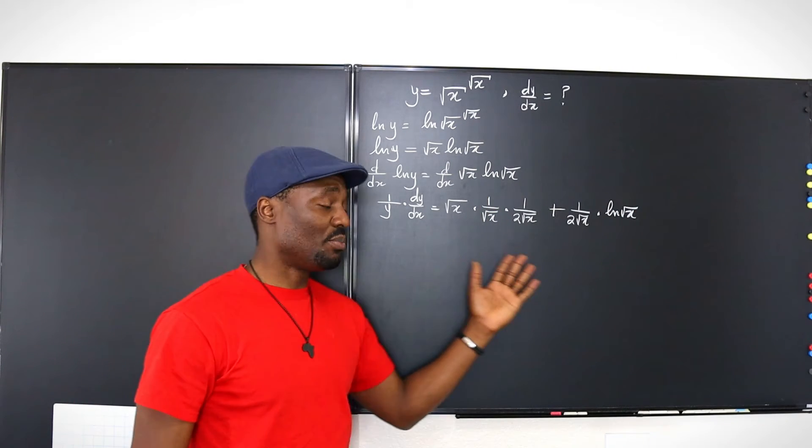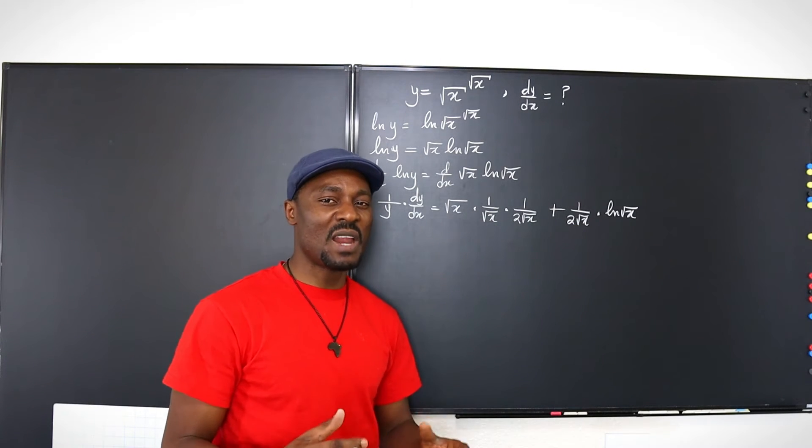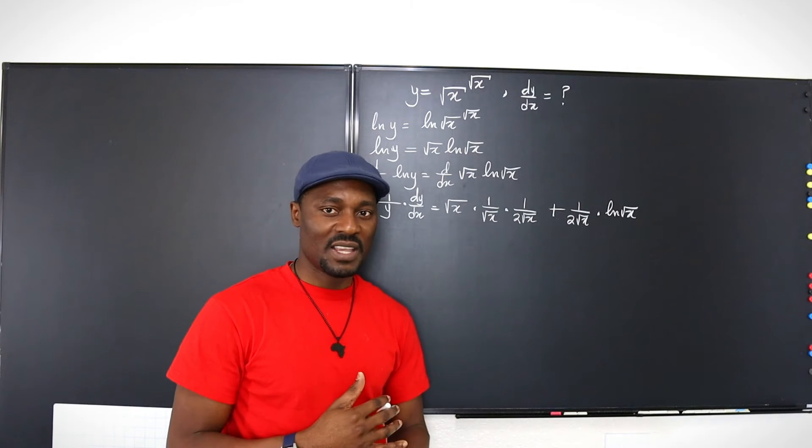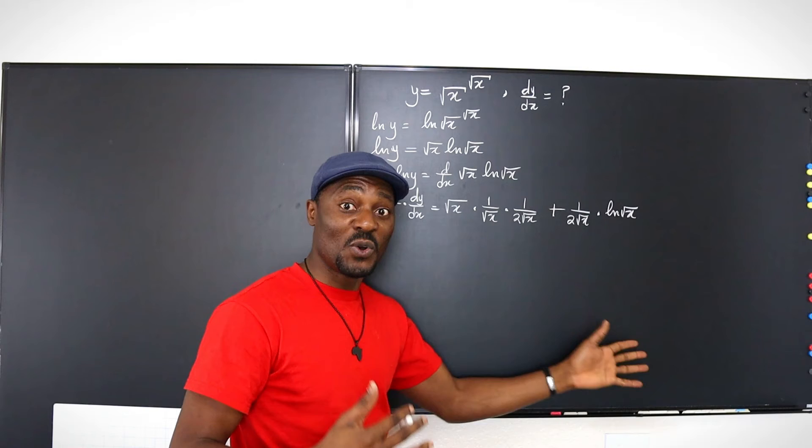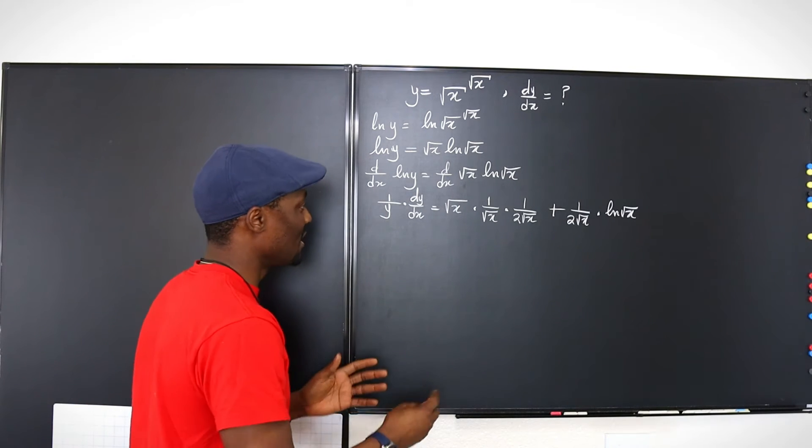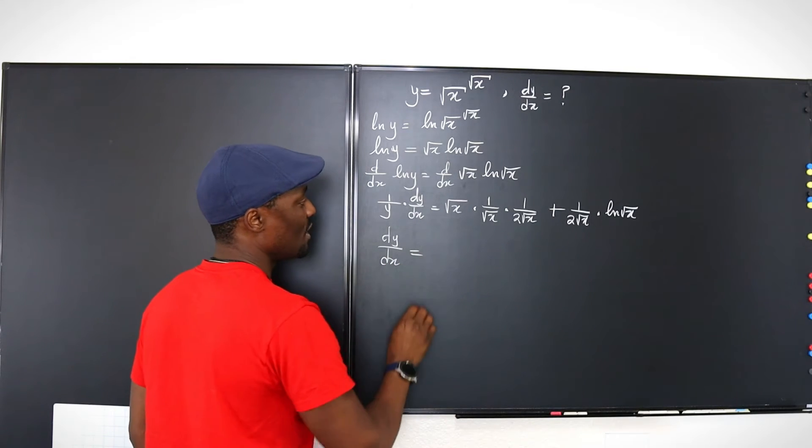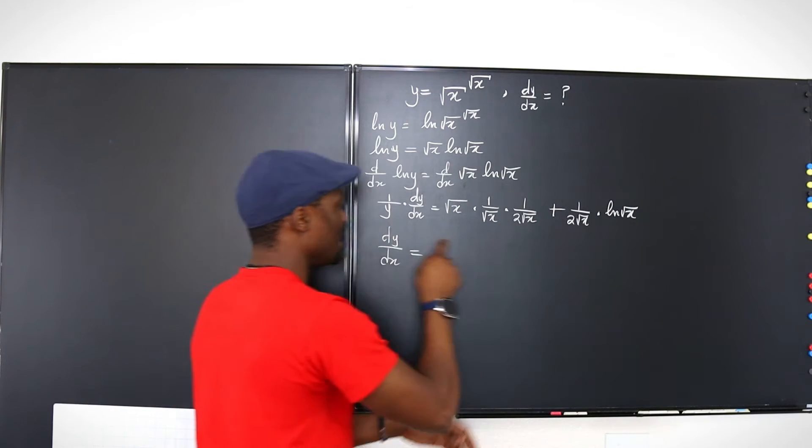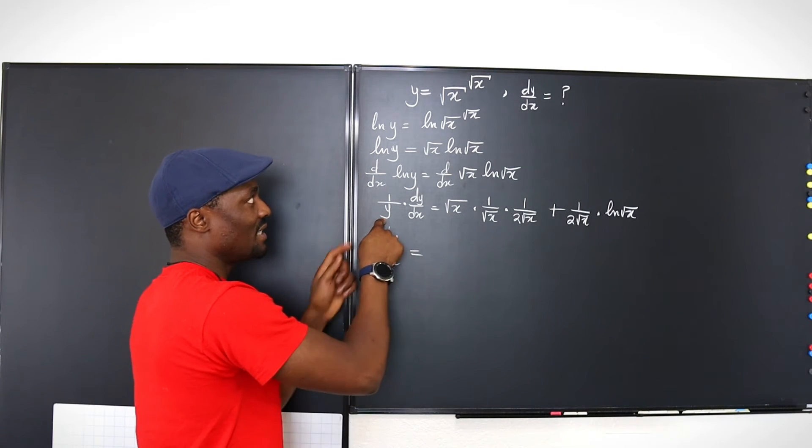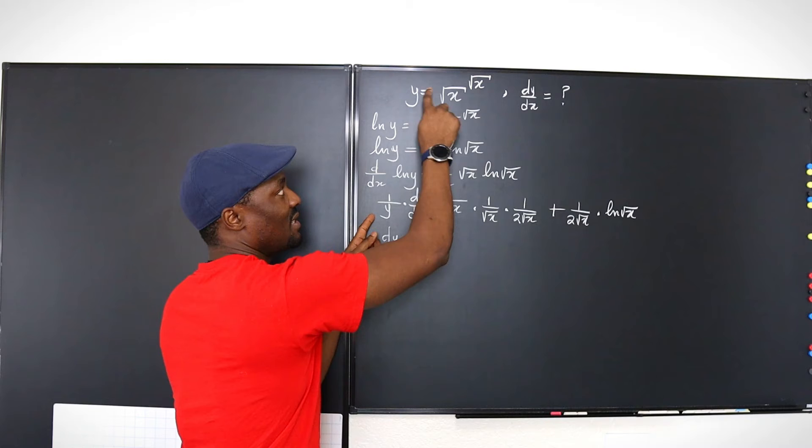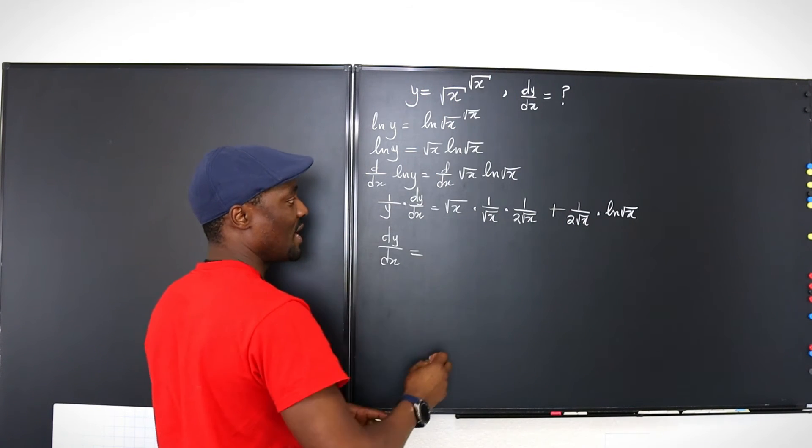Now there are two ways to proceed from here, because this is the differentiation you need to do. Anything else you do from now on is pure algebra. It doesn't mean anything anymore, other than you just knowing what you learned before you got to calculus class. So at this point, we're going to say dy/dx will be equal to what you have on the right hand side, multiplied by y. But remember that y itself is this expression. So instead of you multiplying by y on that side, you just replace it with this.